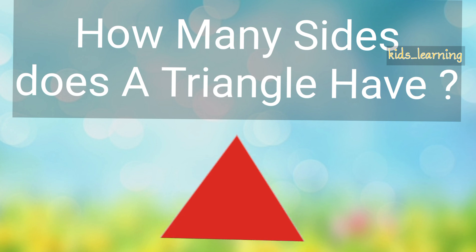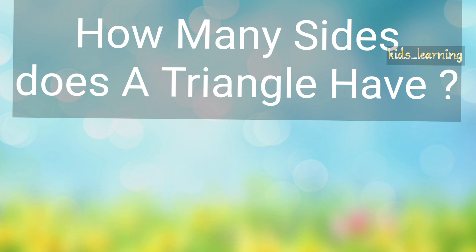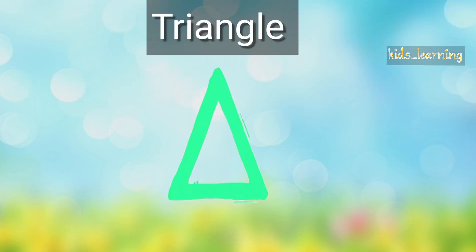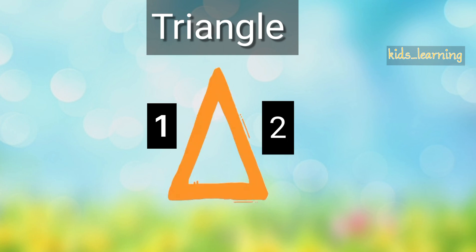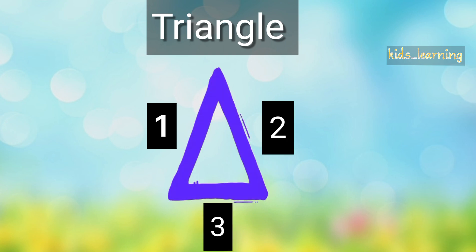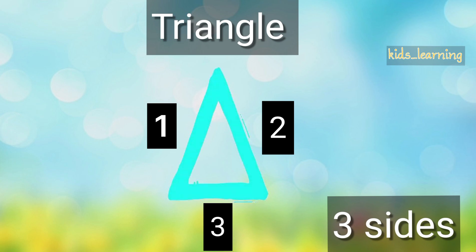How many sides does a triangle have? Let's find out. 1, 2, 3. A triangle has 3 sides.